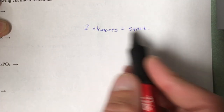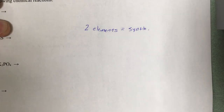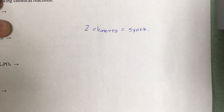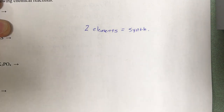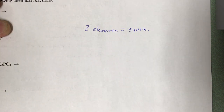If I give you two elements, it's going to be a synthesis reaction, and all you have to do is take those two elements, combine them together, and use the crisscross method to write one formula for one new compound at the end.